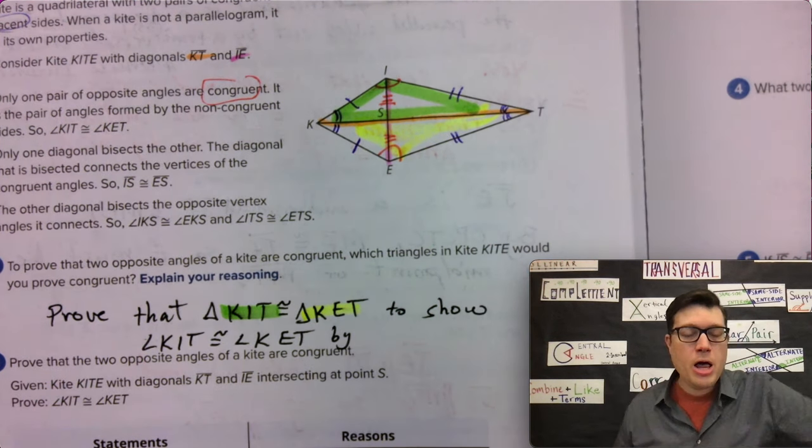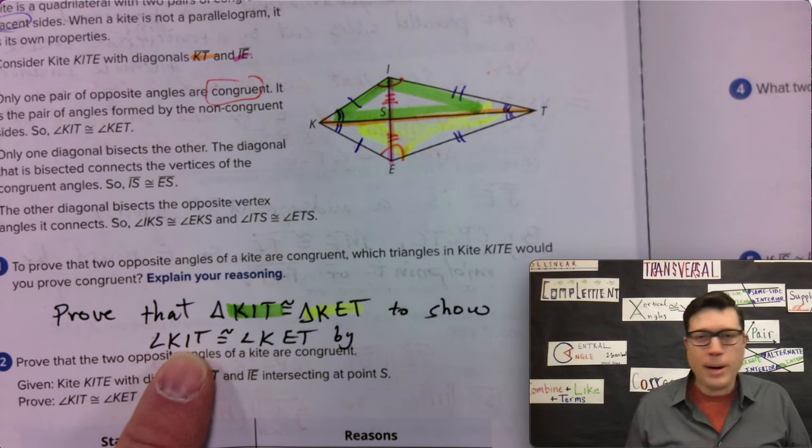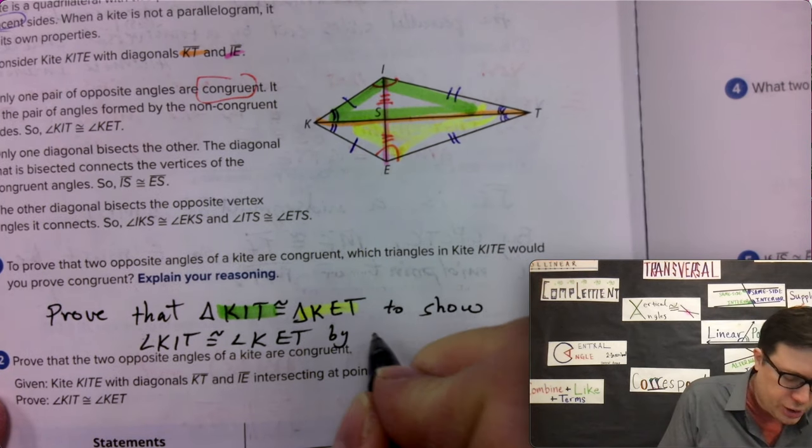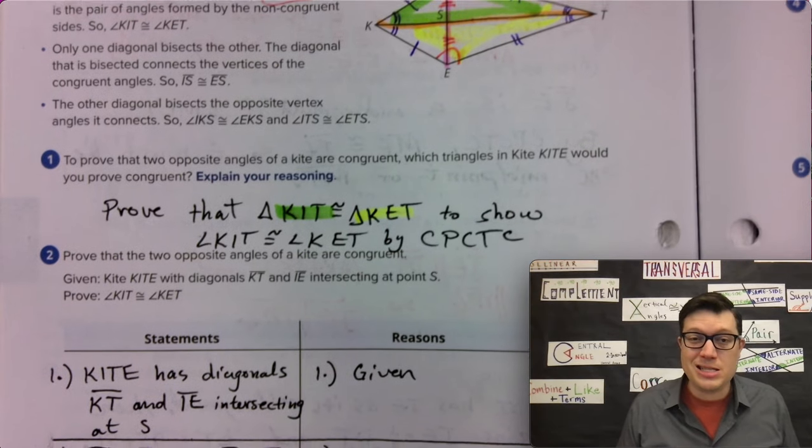And when they are, then the angles that are corresponding in those two triangles will also be congruent by our best friend in geometry. Corresponding parts of congruent triangles are congruent. CPCTC.